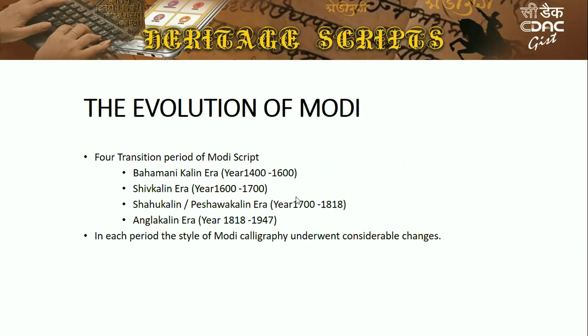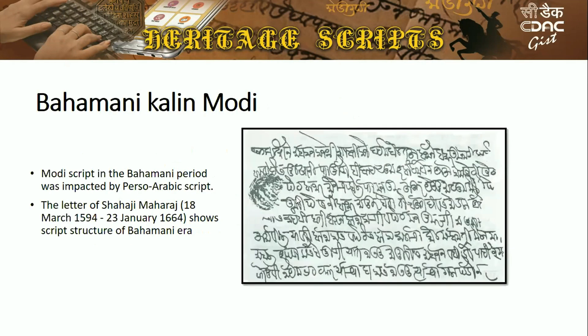The evolution of Modi went through four transition periods. The first era is the Bahamani Kaleen era, from 1400 to 1600. In this era, the Modi script was heavily influenced by Perso-Arabic — scripts like Urdu, Sindhi, and Kashmiri come from the Perso-Arabic tradition. In this period, the script is not fully cursive; consonant clusters and letters are mostly disconnected from each other, though some letters do join.